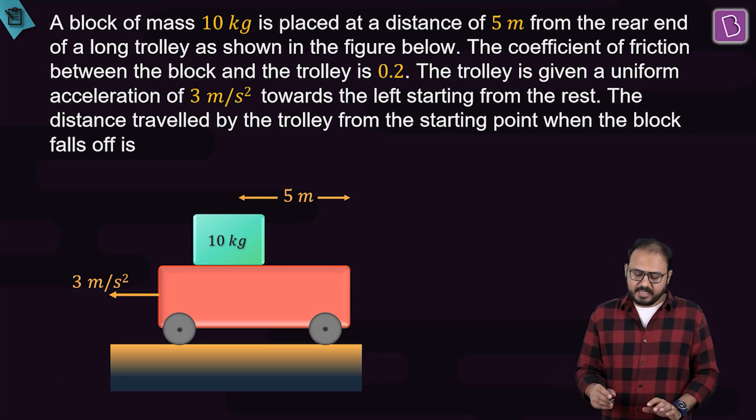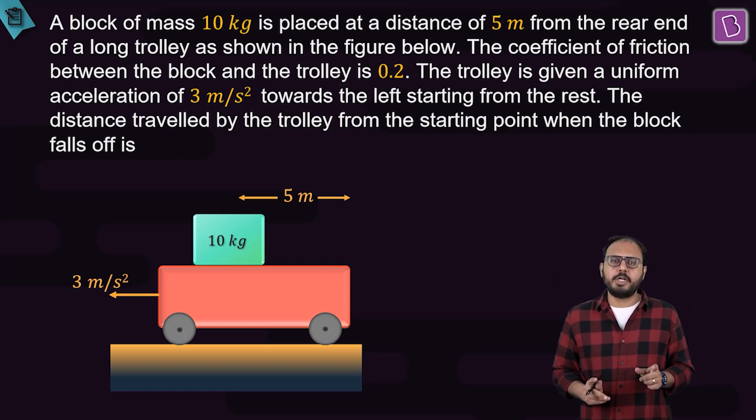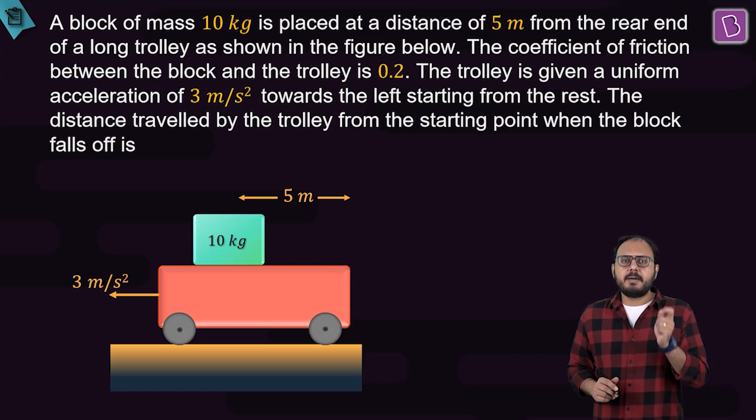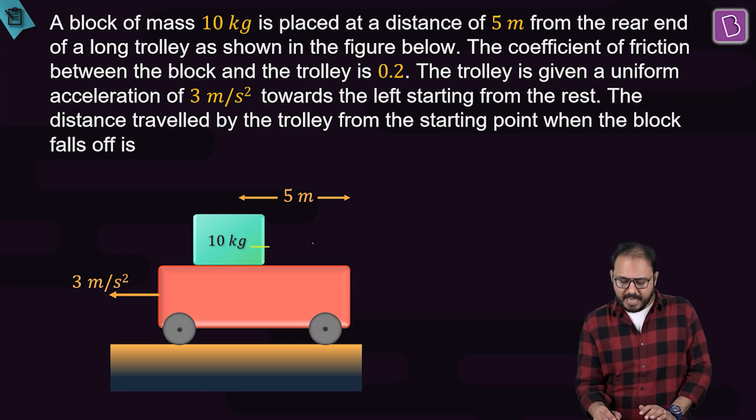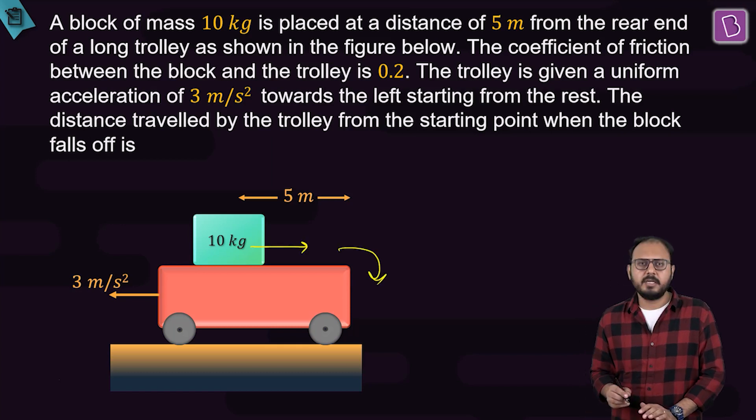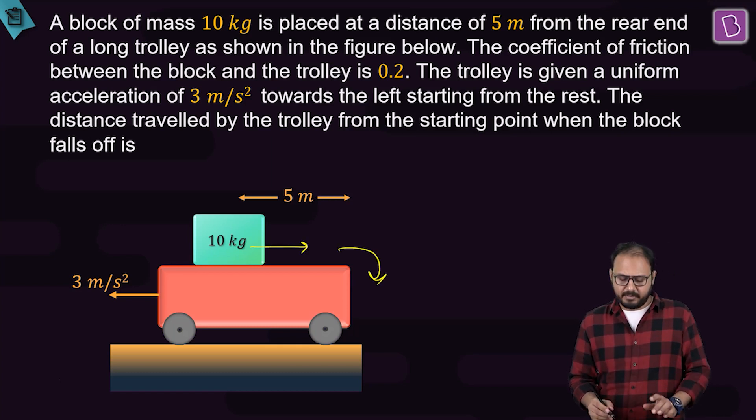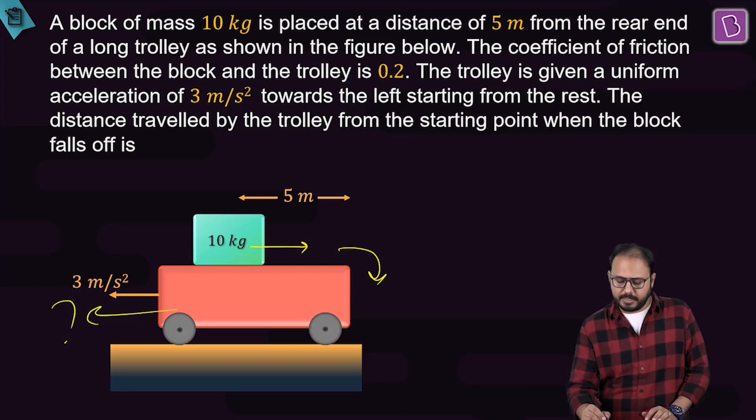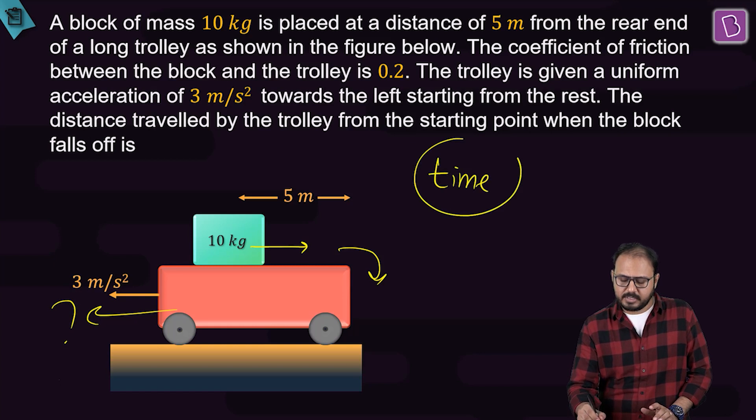Question is, what is the distance travelled by the trolley from the starting point when the block falls off? In other words, the block slides back and eventually falls down. In the same time, how much does the trolley move?